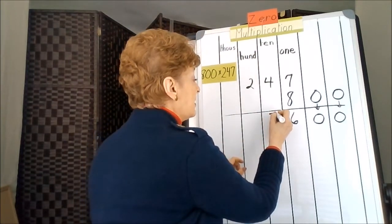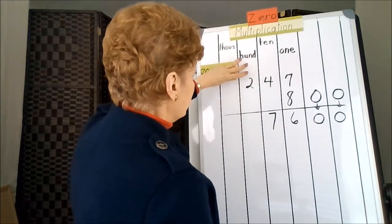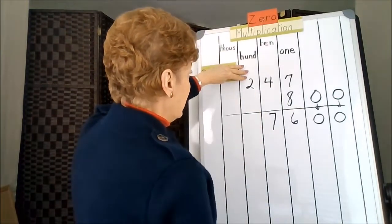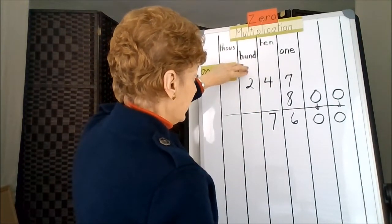The 3 spills over. 8 times 2 is 16, 17, 18, 19.